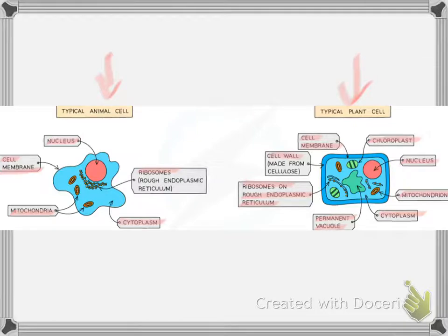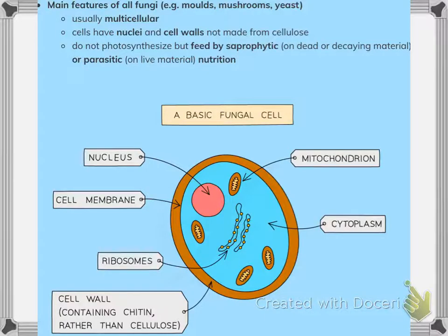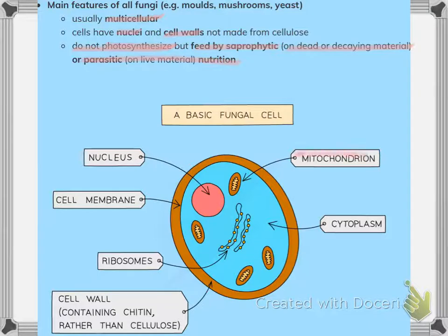Fungi are multicellular; their cells have nuclei and cell walls not made from cellulose. They do not photosynthesize but feed by saprophytic nutrition — feeding on dead or decaying material — or are parasitic, feeding on live material. The fungal cell wall contains chitin, not cellulose, and the cell also has mitochondria, cytoplasm, ribosomes, and cell membrane.